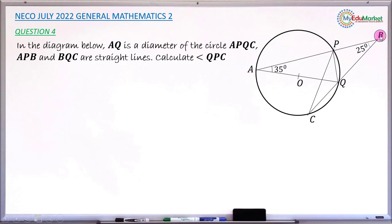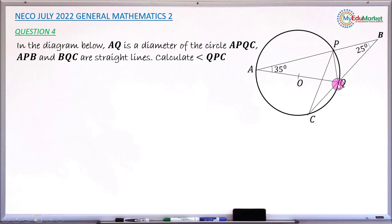Line APB is a straight line, so at point B there is no bending — it's just an extension of line AP. Similarly, line BQC is another straight line, so from Q there is no bending; this is just an extension of line BQ.